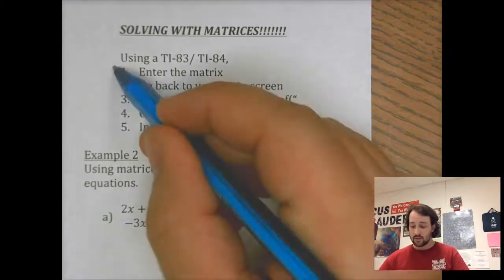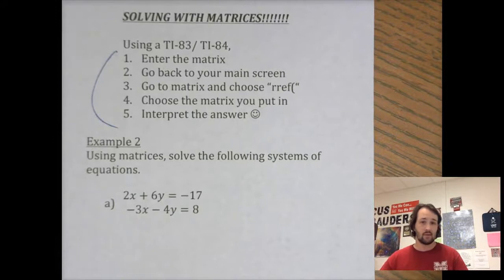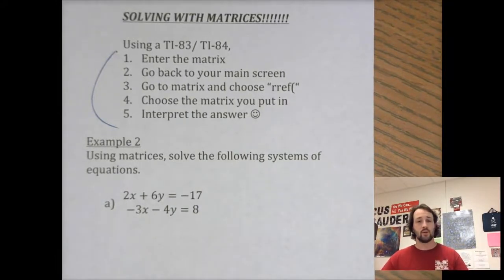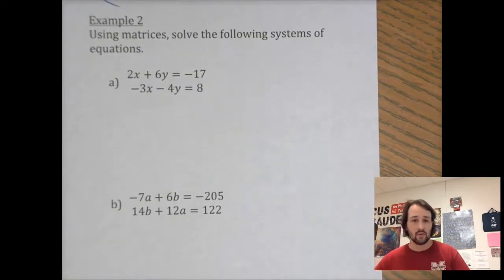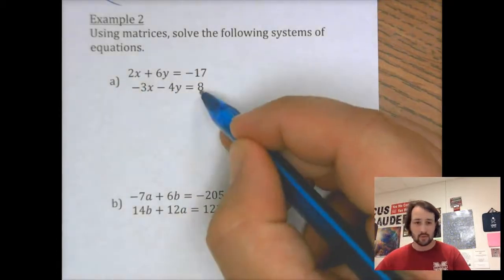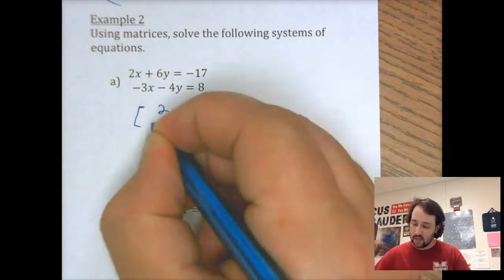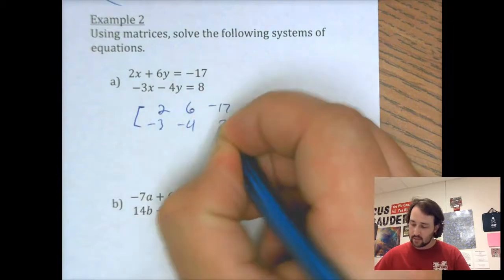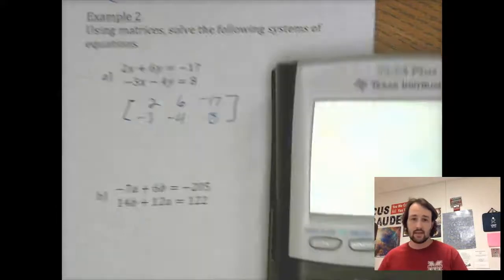All right, so here are your steps. I'll walk you through them as we go through a problem. This is a super simple process. First, make sure your x's are in a row, your y's are in a row, and it equals your numbers. Since we have that, I can say this is the matrix: 2, 6, negative 17, negative 3, negative 4, 8. So there is my matrix. Now I'm going to go into my handy-dandy TI-84 and go to matrix — it's right above the x to the negative 1 button, so I hit second and go to matrix.